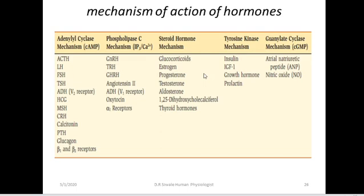This table summarizes and categorizes the hormones by their various mechanisms of action. Starting from the guanylate cyclase mechanism, we have just a few: the natriuretic peptides released by the heart, and nitric oxide, which is a vasodilator. These act by the guanylate cyclase mechanism.